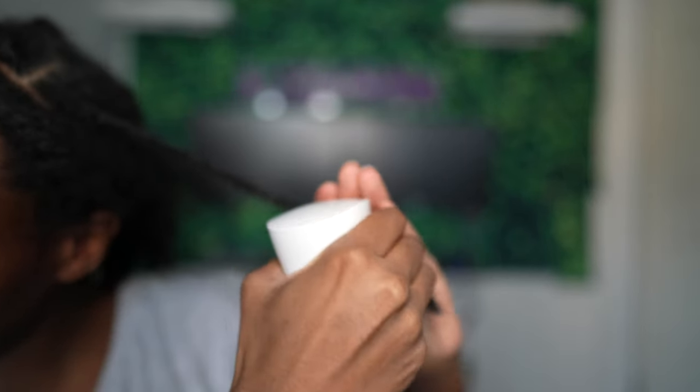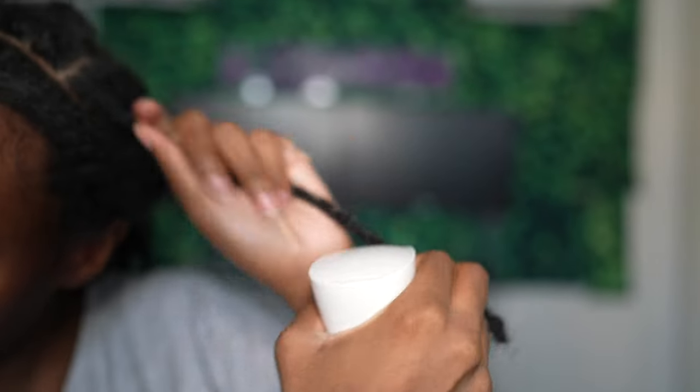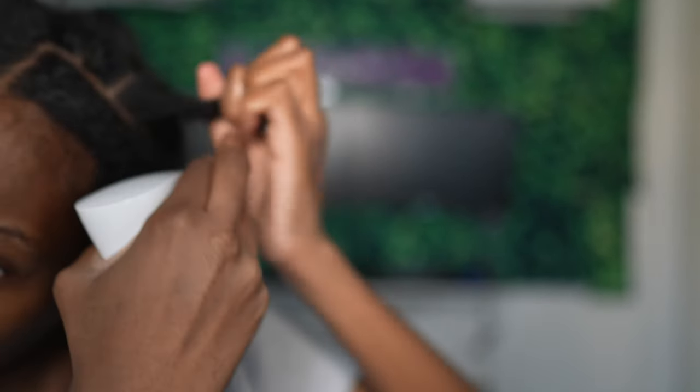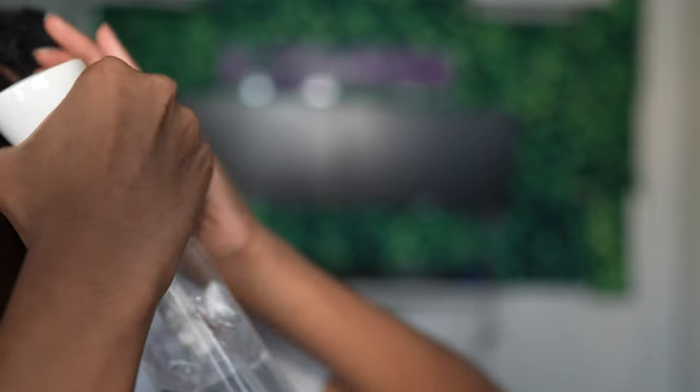First thing you want to do is saturate your lock with water. You do not want to take these locks down dry. Here I'm balling it up and spraying it because it's easier since it's longer.